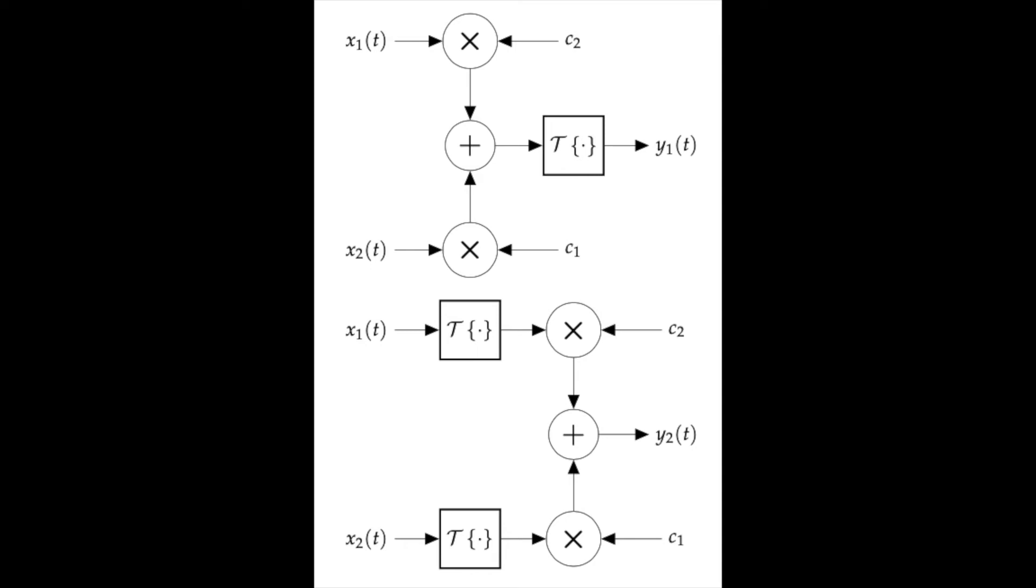Here's the test of linearity shown as a diagram. The system diagram shown above and the system diagram shown below should be equivalent. This means that y1 should be equal to y2 for all possible values of x1, x2, c1 and c2.